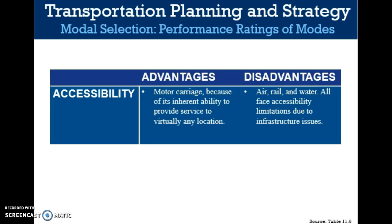Accessibility determines whether a particular mode can physically perform the transport service required, and considers the mode's ability to reach origin and destination facilities and provide service over the specified route. Accessibility advantages are attained by motor carrier because of its inherent ability to provide service to virtually any location. Air, rail, and water, however, face accessibility limitations due to infrastructure issues.